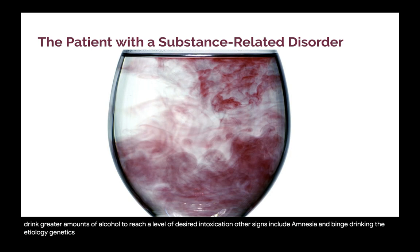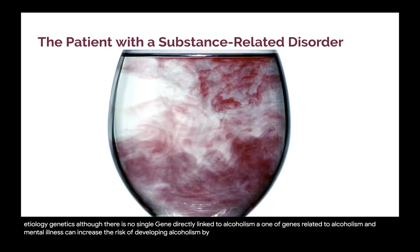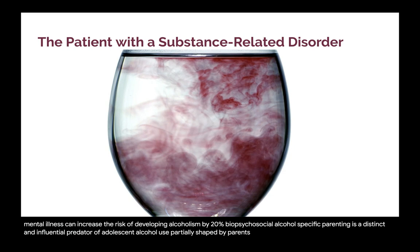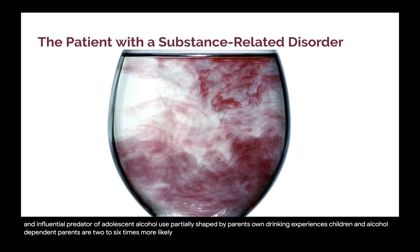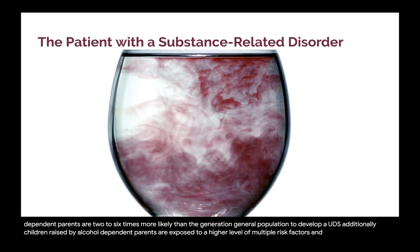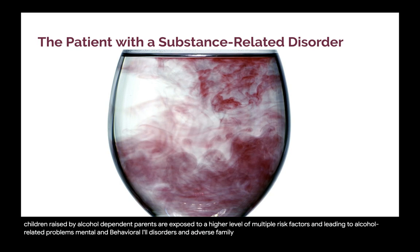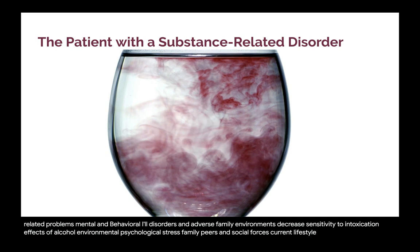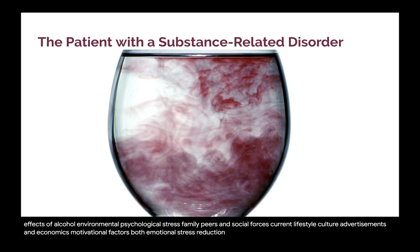The etiology of alcoholism involves genetics — although there is no single gene directly linked to alcoholism, a combination of genes related to alcoholism and mental illness can increase the risk by 20 percent. Biopsychosocial factors include alcohol-specific parenting. Children of alcohol-dependent parents are two to six times more likely than the general population to develop AUDs and are exposed to higher levels of multiple risk factors. Environmental, psychological stress, family, peers, social forces, current lifestyle, culture, advertisements, and economics also play a role, along with motivational factors such as emotional stress reduction, mood enhancement, and social rewards.